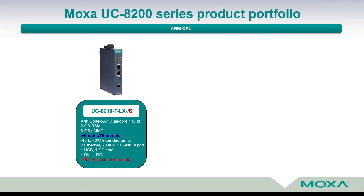It features a 1 gigahertz CPU, 2 gigabyte RAM, and 8 gigabyte eMMC. It comes with an extended temperature range from minus 40 up to plus 70 degrees Celsius, which is indicated by the capital letter T in its name. It has two Ethernet ports, two serial ports, one CAN bus port, one USB port, and one SD card slot for storage expansion.